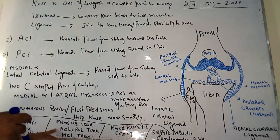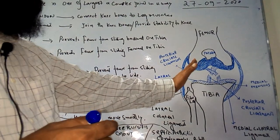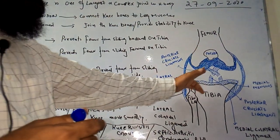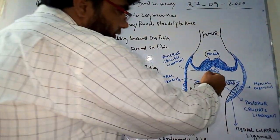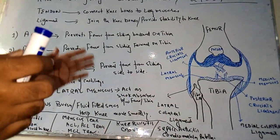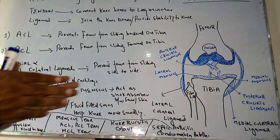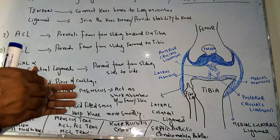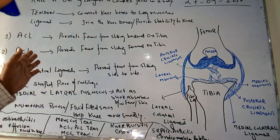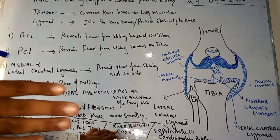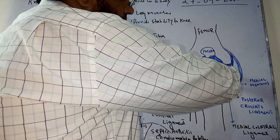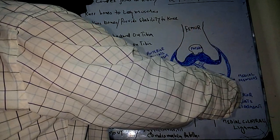Another important issue is ACL — anterior cruciate ligament — and PCL — posterior cruciate ligament — tears. These can tear anteriorly and posteriorly, causing major injury to the knee and totally disturbing the movement of the knee. Another important condition is knee bursitis, where there is a lot of swelling in the knee, causing problems with knee movement.